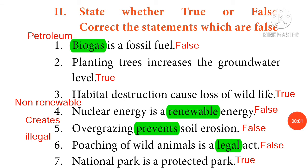State whether true or false and correct the statements which are false. Statement: Biogas is a fossil fuel. The given statement is false. The correct statement is: petroleum is a fossil fuel. Instead of petroleum, we can also write natural gas, coal, etc.